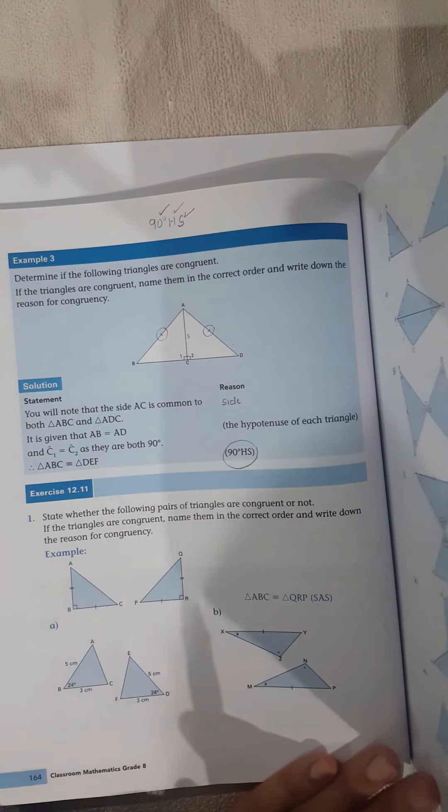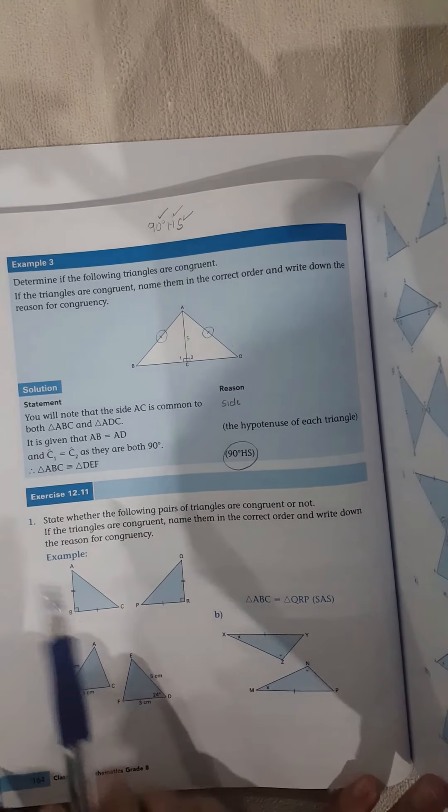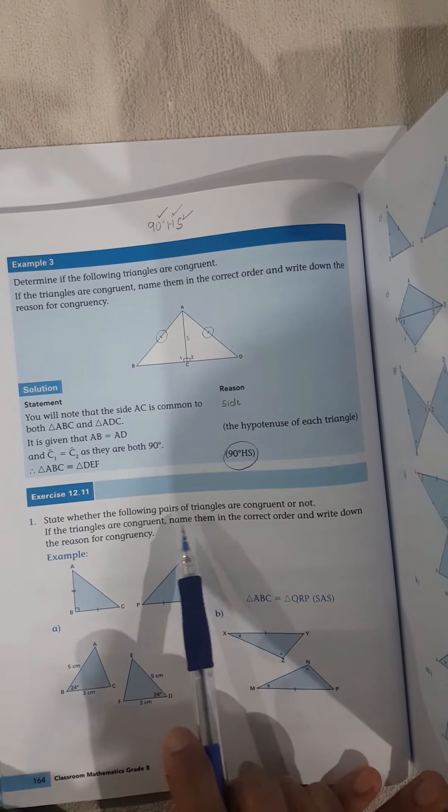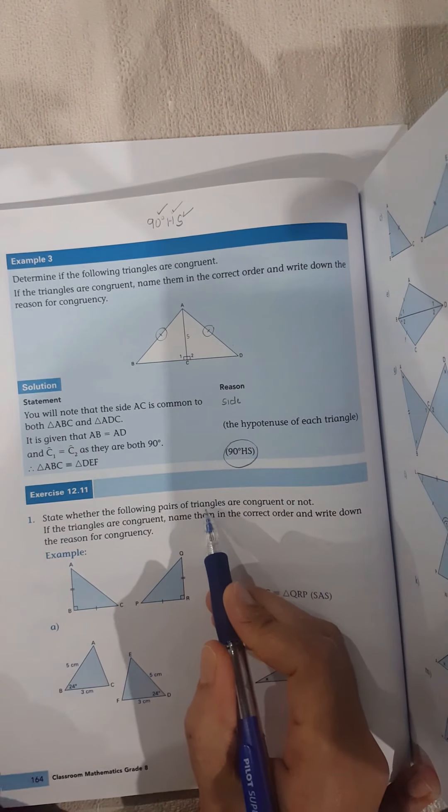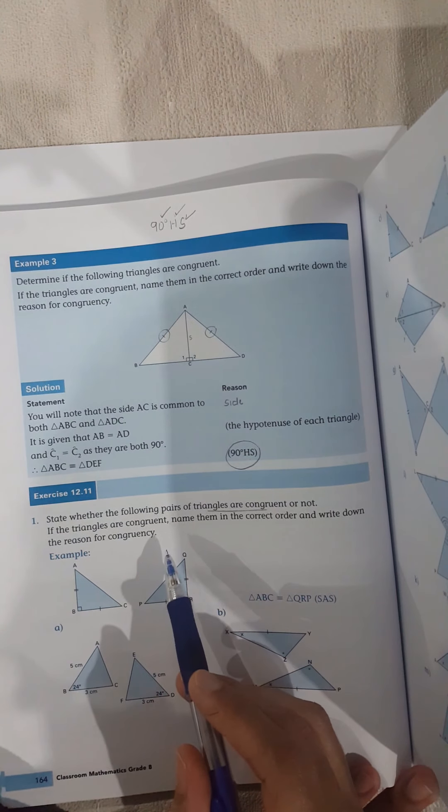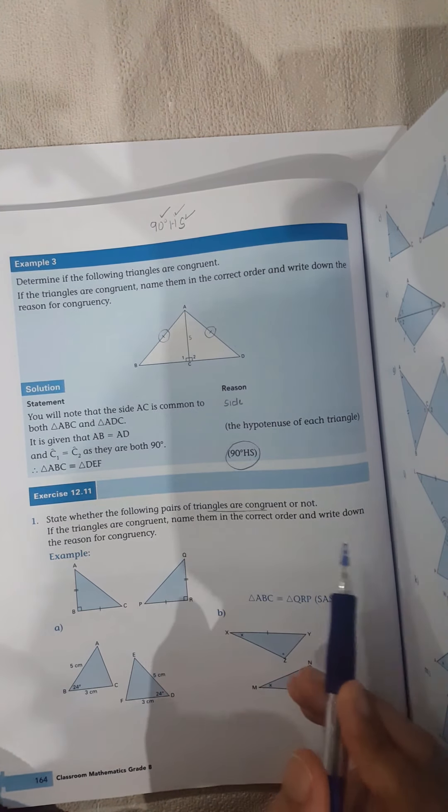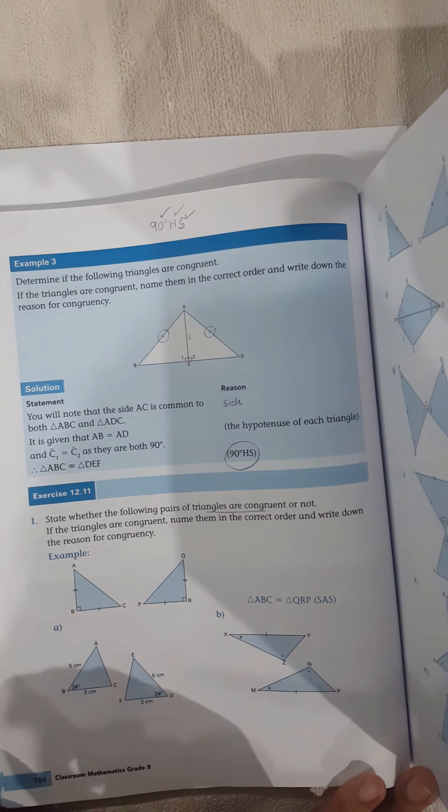Now let's look at the questions here so you guys won't get confused. So we have to do 12.11 today. State whether the following pairs of triangles are congruent or not. The question is very important. So if the triangles are congruent, name them in the correct order and write down the reason of congruency. Same thing we've done in the examples.